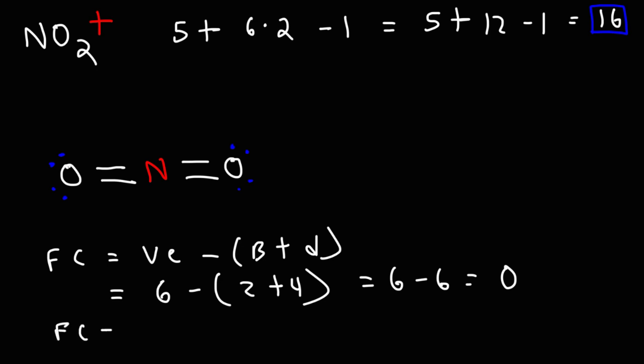Now in the case of nitrogen, it has five valence electrons, four bonds, no dots. So five minus four is plus one. So therefore it is the nitrogen atom that bears the positive formal charge in the nitronium ion Lewis structure.